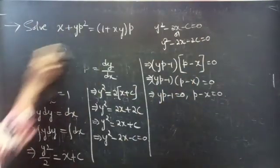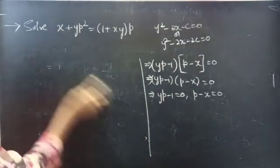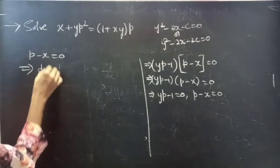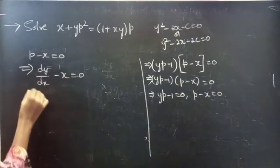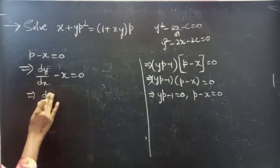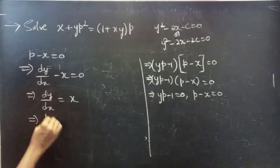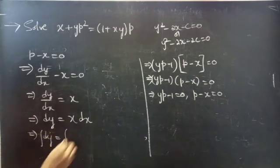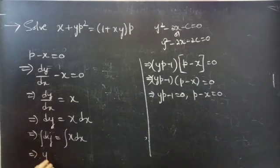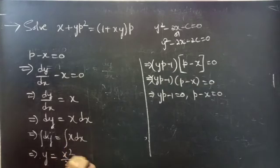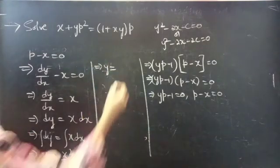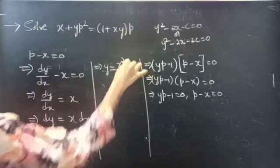Now consider the second factor: p minus x equals to 0, so p equals to x. Substituting p equals to dy/dx gives dy/dx equals to x, so dy equals to x dx. Since variables are separable, integrating both sides: the integral of dy equals y, and the integral of x dx is x squared over 2 plus c.